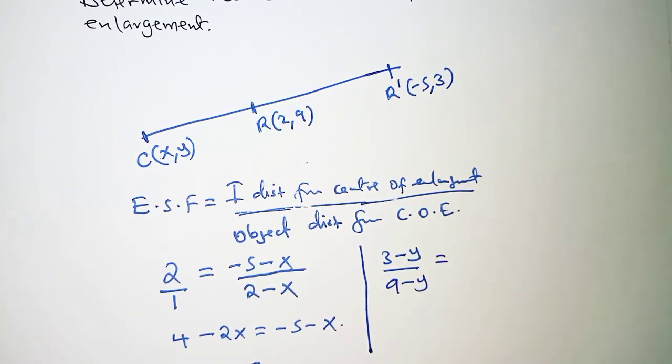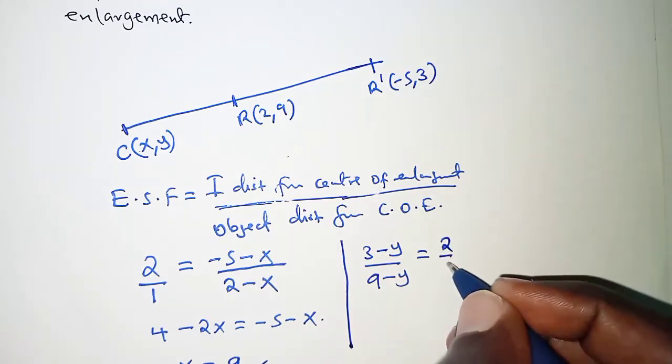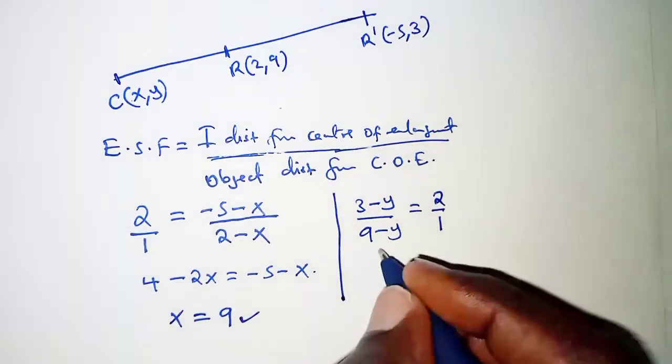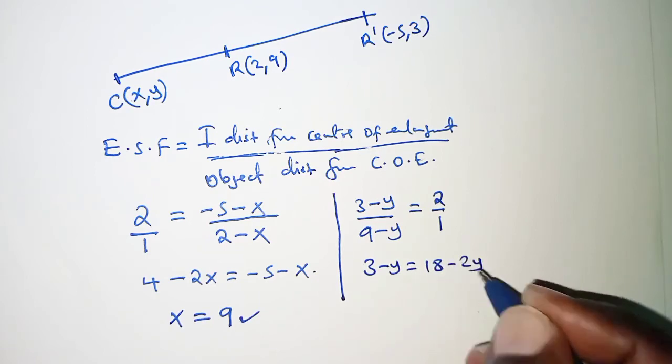And that should still be positive 2. For cross multiplication let's have it over 1 and then we have 3 minus y is equal to 18 minus 2y.